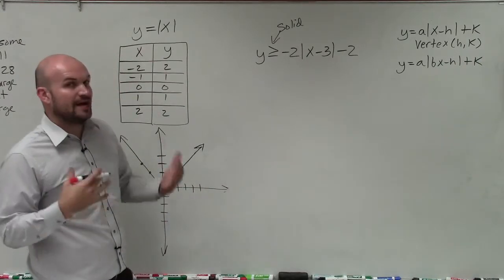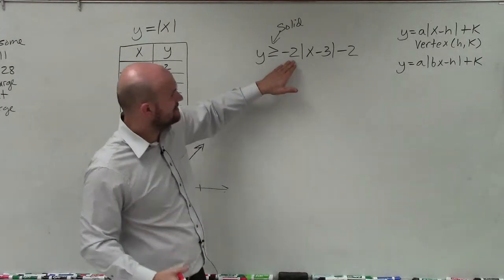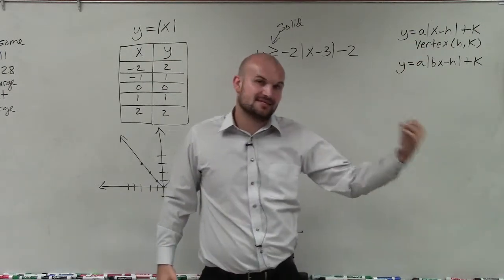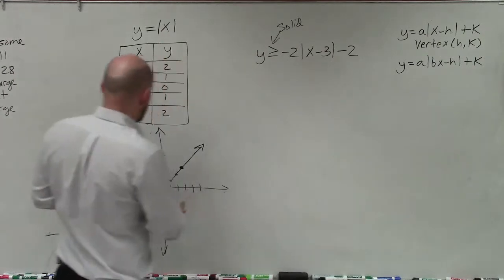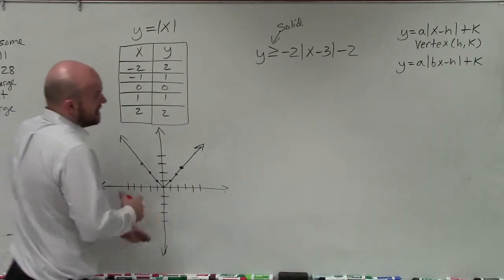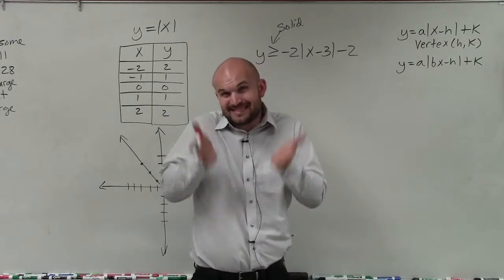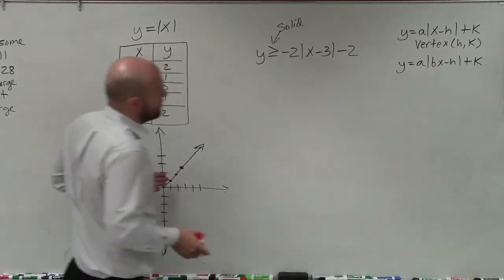The next thing we want to do is identify all the transformations. So I have a negative 2a. And what that's going to tell me is that negative, since it's less than 0, I'm going to be reflecting. So rather than my graph opening up, it's now going to open down. What the 2 is going to do is horizontally compress my graph. It's going to be skinnier than my parent graph over here.